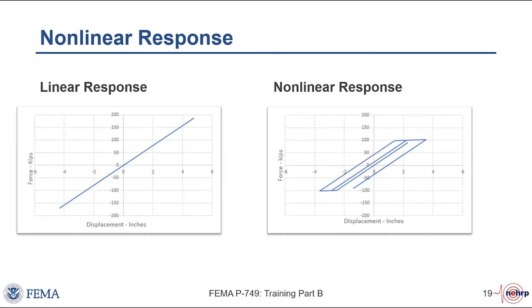The downside of nonlinear response is that the nonlinearity results from damage — yielding, buckling, and cracking — which can make a building weaker and uninhabitable. In the building code, we make a trade-off: we take advantage of nonlinear response to design structures for a fraction of the force that would cause yielding, but accept the risk of damage. The building code contains many criteria intended to ensure that when a building goes nonlinear in response to earthquake shaking, the damage doesn't become so severe as to be life-threatening.